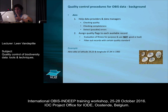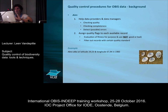I'll first give you some background. OBIS has a number of quality control procedures in place. A number of them are automated on the OBIS database. A number of those are available through tools and web services so that you can do a first check yourself before you submit data. The aim of these quality control procedures is to really help you as a data provider and a manager to check the quality and the completeness of the data sets and also to detect possible errors in the data.